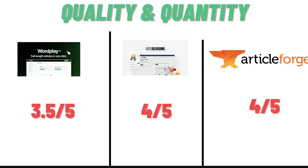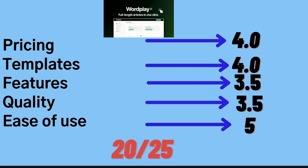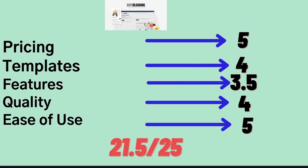In terms of quality and quantity, I'd give Wordplay a score of 3.5 out of 5, and I'd give Autoblogging.ai and Article Forge a score of 4 out of 5. I've been using Autoblogging.ai a lot recently and I really like the output — the quantity and quality have been impressive compared to other article generation tools I've used. So I am leaning more towards Autoblogging.ai, but they are a fairly new AI copywriter in the space, and I'm still testing it out. Overall, I'd go with Autoblogging.ai and Article Forge over Wordplay for quality and quantity.